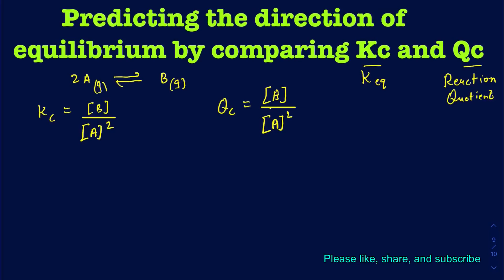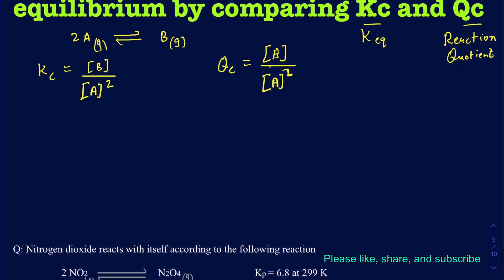Then if their expressions are the same, what's really the difference between those two? Well, it turns out the Kc is given when you are already at equilibrium. The Qc — you don't know whether you are at equilibrium or not. So suppose you're given the concentration of A and concentration of B, and at that given time you don't know if you are at equilibrium or not. You go ahead and figure out what the Qc is going to be, and then compare the Qc with the given Kc value.